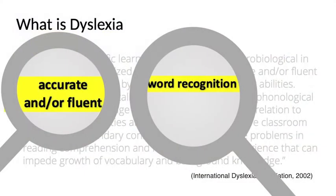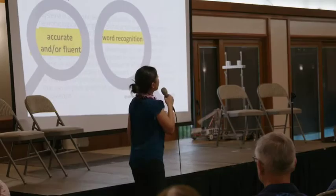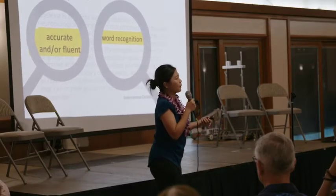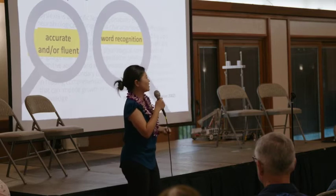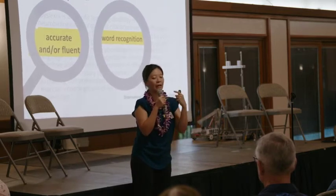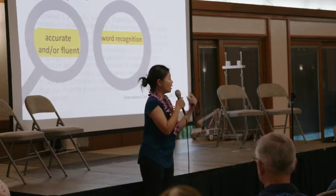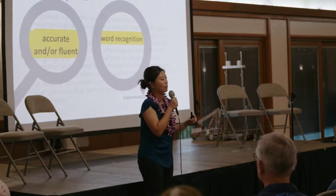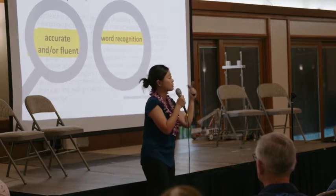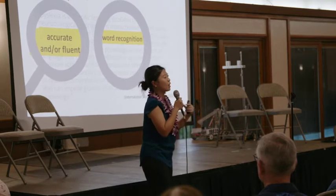The second part of the definition addresses how we characterize dyslexia: difficulties with accurate and/or fluent word recognition. Word recognition — in more layman's terms — is pretty much like sight word reading. We've all tried to teach our kids sight words, giving them a list to identify quickly, automatically, instantly. The key with word recognition is not to sound out the word one by one, but to see the word and say it immediately. There's a lot of automaticity — it's almost an instant process.